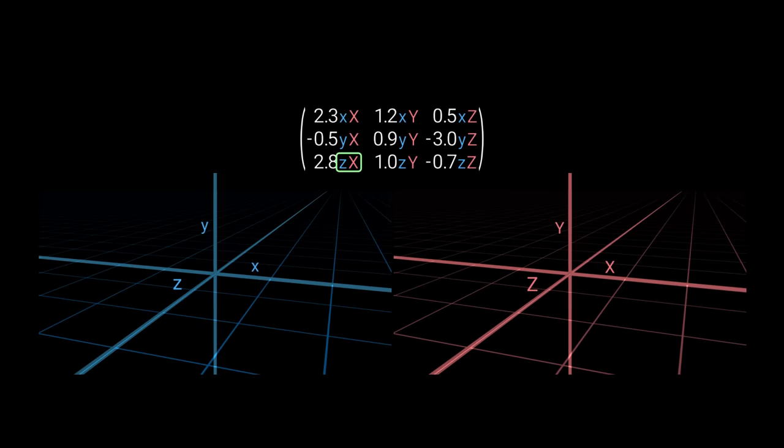Similarly, this one is associated with the z-axis of the blue space, and the x-axis of the red space. And we have here all 9 possible combinations.